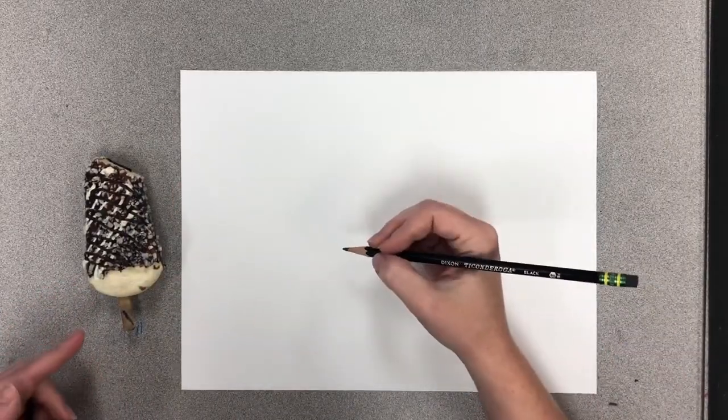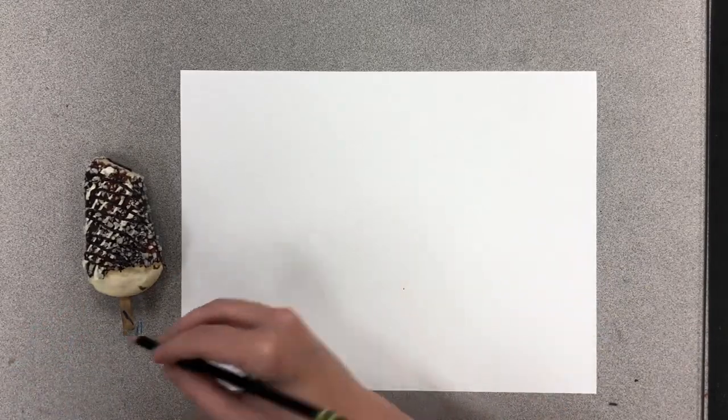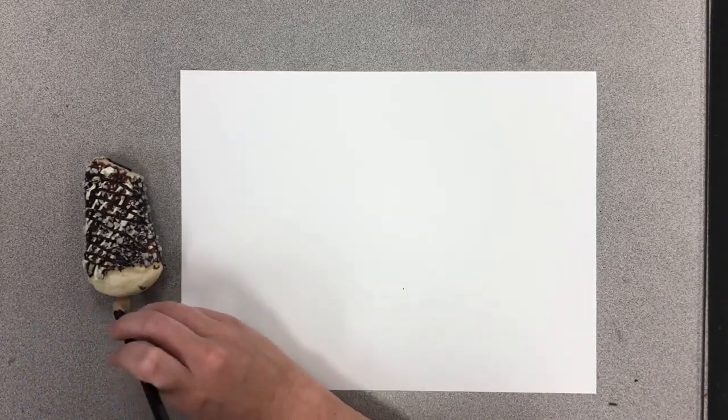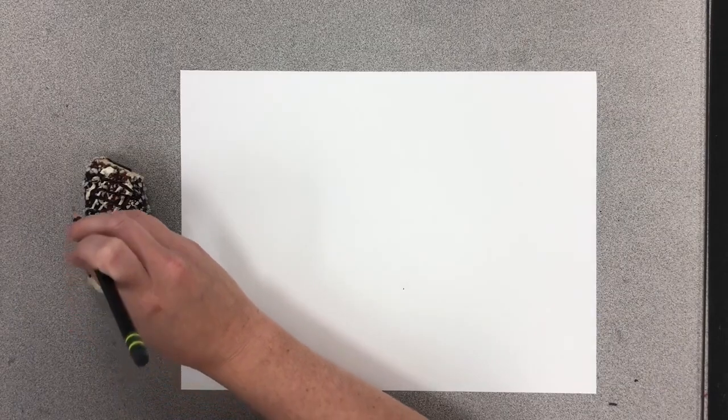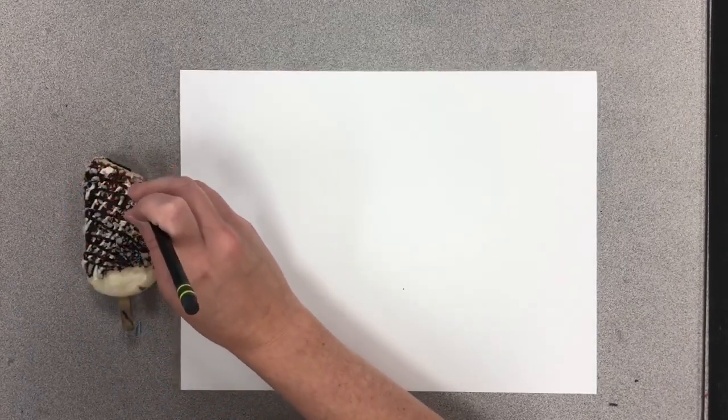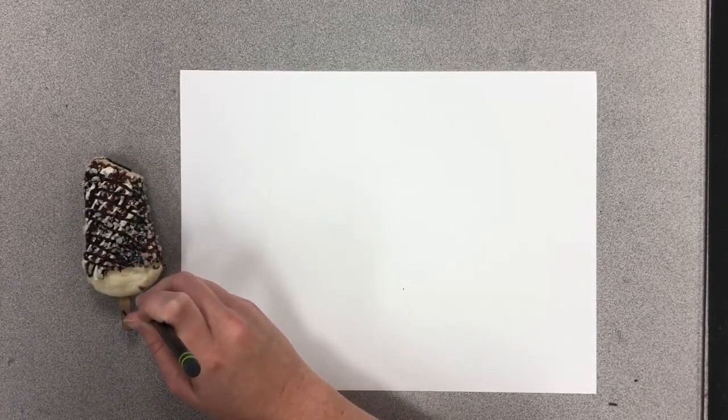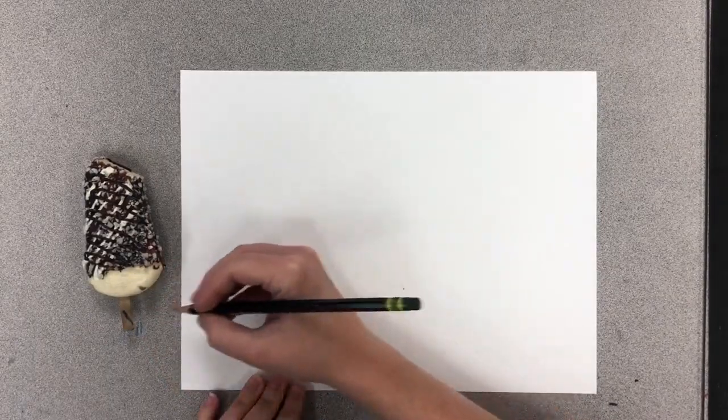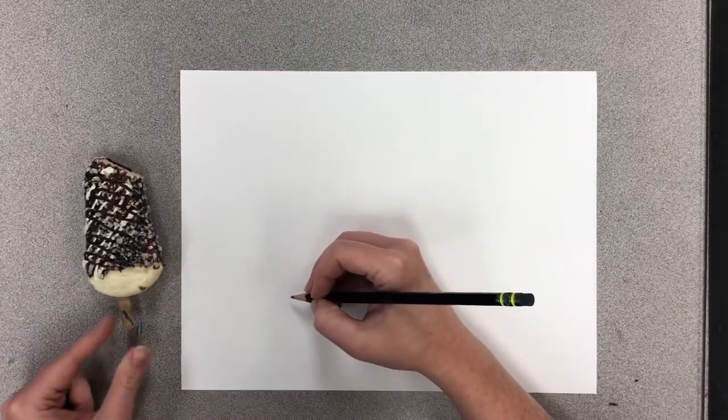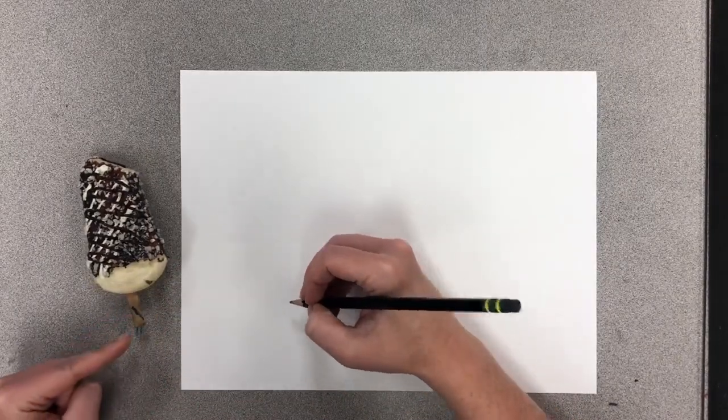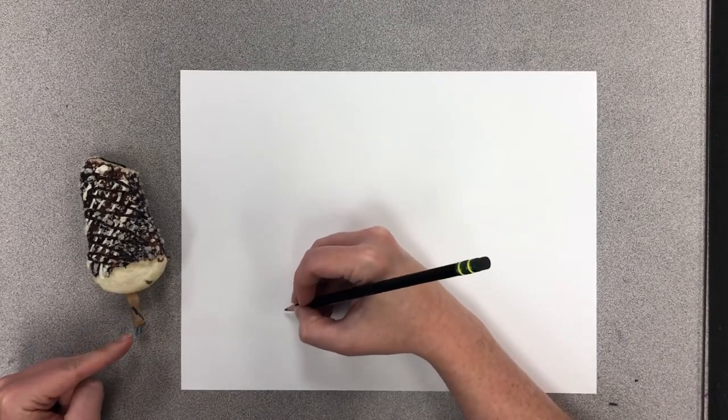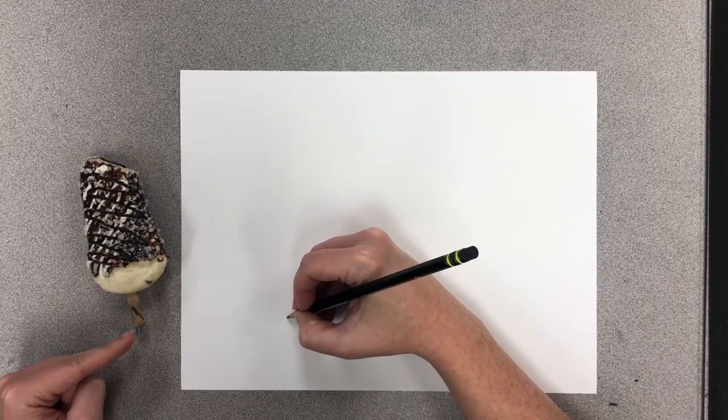So we're going to follow the contours or the outlines of our drawing first, and then we're going to come back in and add details. When I do this I'm going to use my finger to show you what I'm doing with my eyes. So where I'm going to start is down here in the corner.